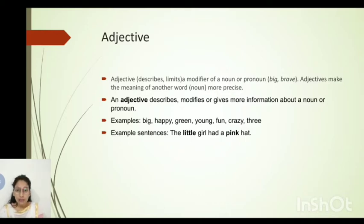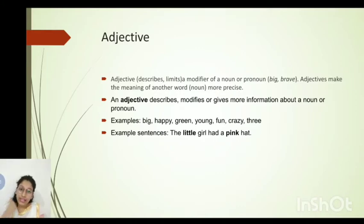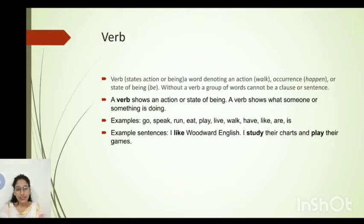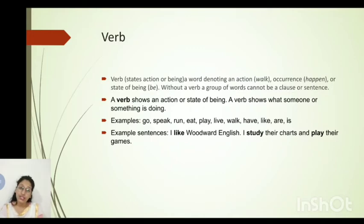Adjectives are modifiers — they add to the meaning and modify nouns. For example, when we say 'Ram is a boy,' nothing much is conveyed. But when we say 'Ram is a good boy,' the word 'good' becomes the adjective — it describes Ram, modifies, and gives more information about the noun. Verbs denote action: when a person or thing does something, the word that denotes that action is a verb.